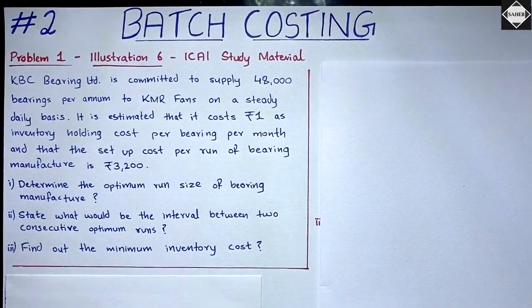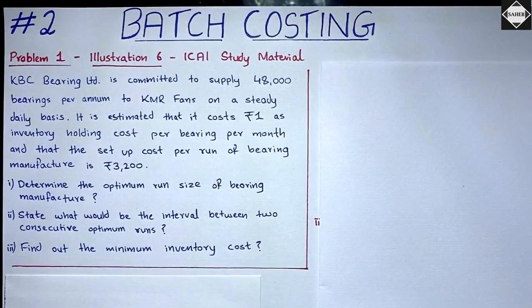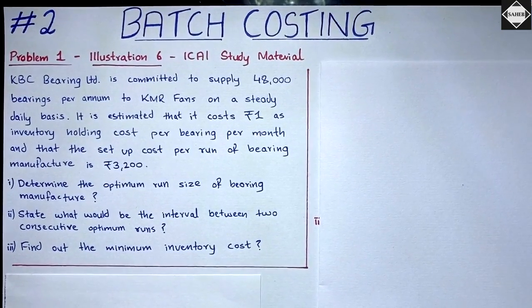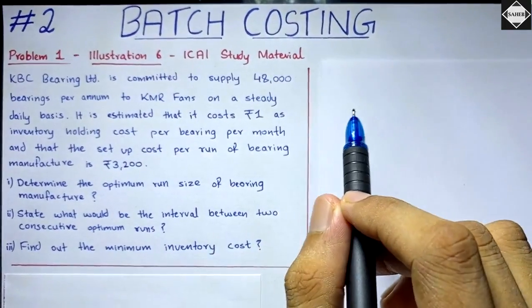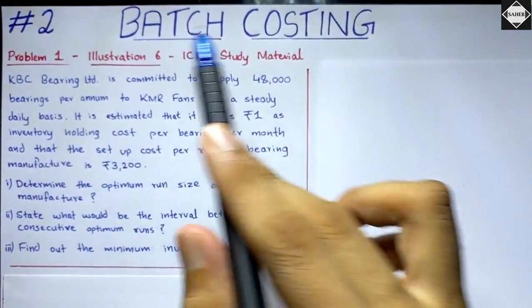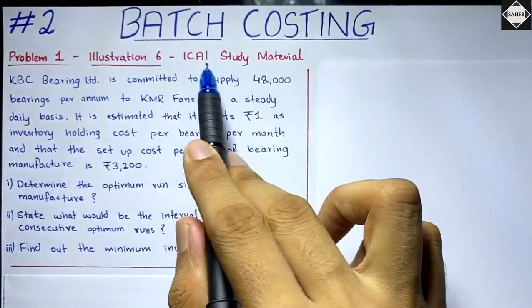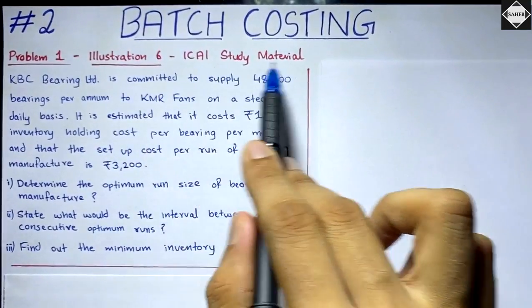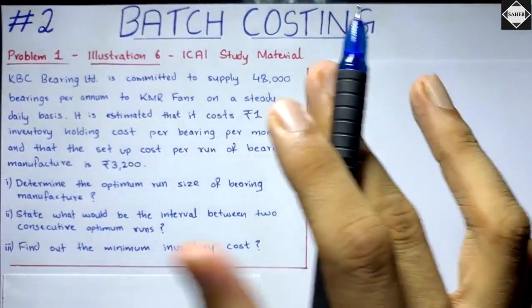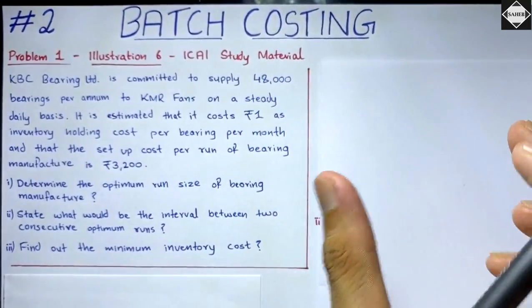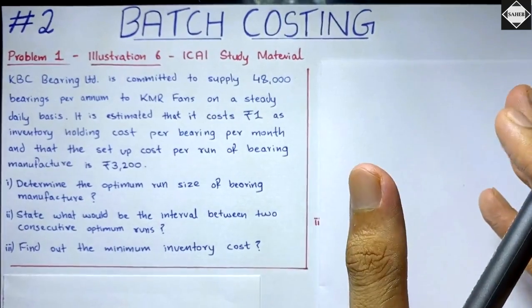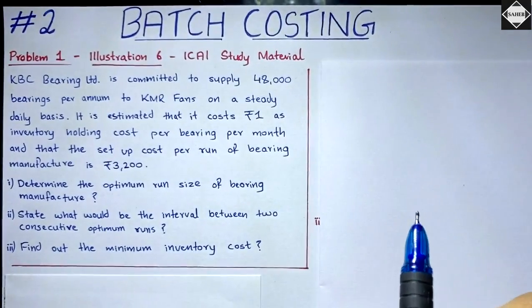Hi everyone, welcome back to Sahib Academy. In today's second video of the batch costing chapter, we are going to see Illustration 6 of the ICAI study material. This problem is based on EBQ — Economic Batch Quantity.